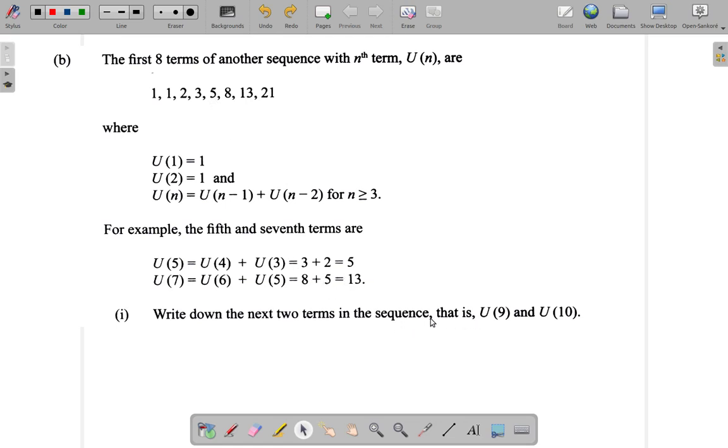Write down the next two terms of the sequence, that is U(9) and U(10). Let's see what that is all about. We're going to write down U9 and U10. Let's follow these rules now.